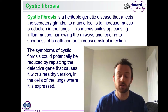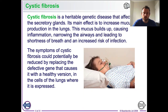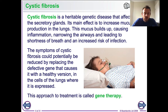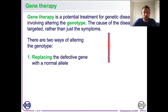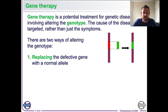Gene therapy involves altering the genotype of the organism. There are two basic strategies: number one, replace the defective gene with a normal allele — in this image, here's a defective gene and we remove it and replace it with the functioning allele for the CFTR protein.